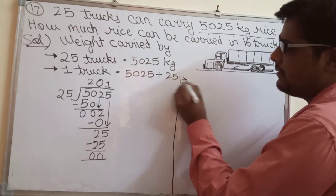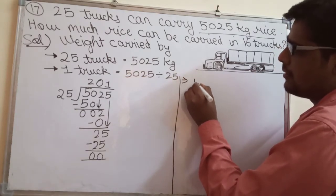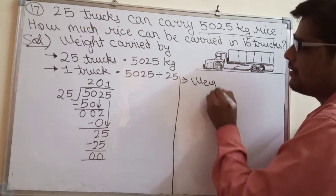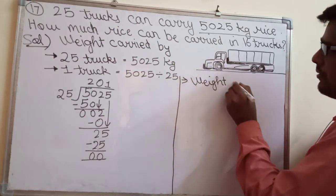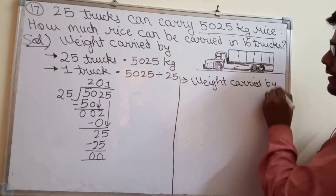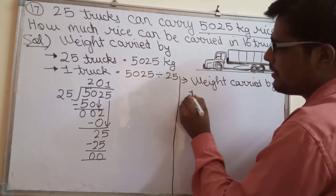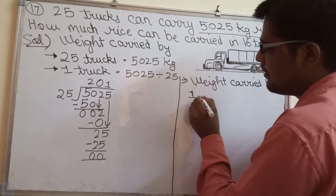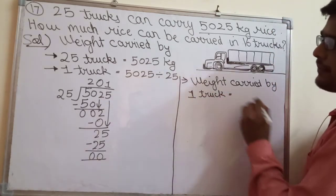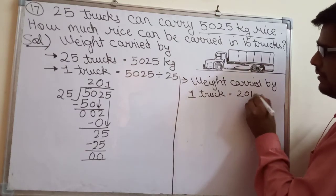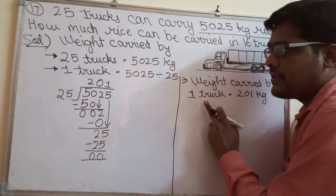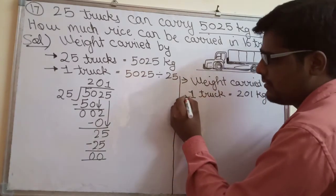So you can write here: weight carried by 1 truck is 201 kg. Now we have found the weight for one truck. From this we can find the weight for 16 trucks.